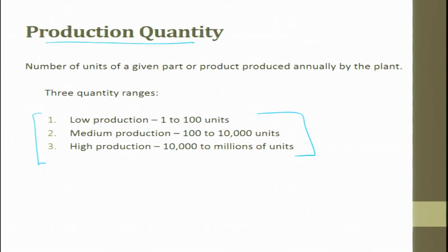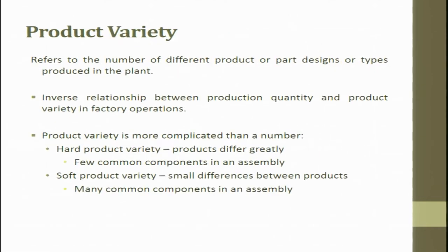By looking at the production quantity, the factory layout, machine purchase, and whether to use hard or soft automation all come into play. Product variety refers to the number of different products or part designs produced in a plant. There is an inverse relationship between production quantity and product variety. Hard product variety refers to products that differ greatly; soft product variety refers to small differences between products.